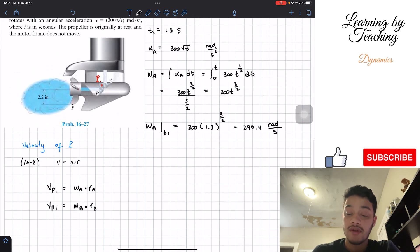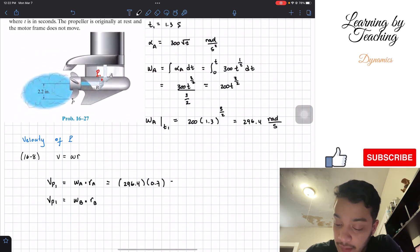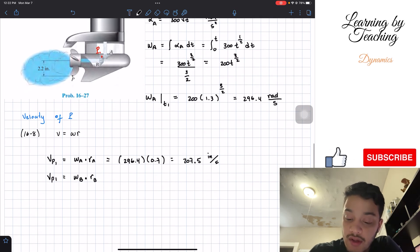So having these two equations, now we have our unknown that we want to figure out. We do know the angular velocity of A, the radius of A, and the radius of B. Therefore, we can calculate this. Let's start by plugging into the first equation. We know that the angular velocity of A is 296.4. We're going to multiply it by the radius of A, which is 0.7 inches. And when we multiply this, we will get a total of 207.5, and the units should be inches per second.